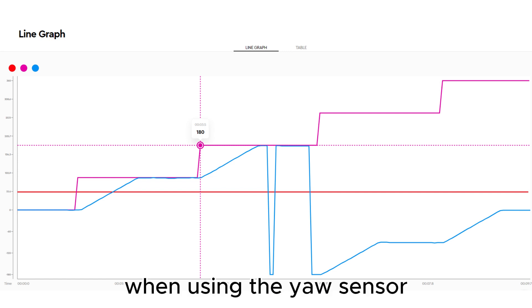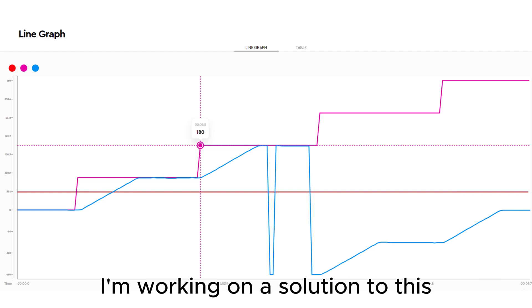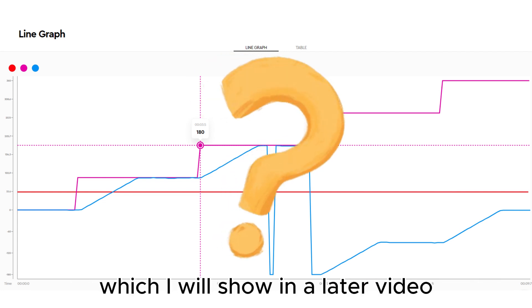When using the yaw sensor, you have to avoid plus or minus 180 degrees. I am working on a solution to this, which I will show in a later video.